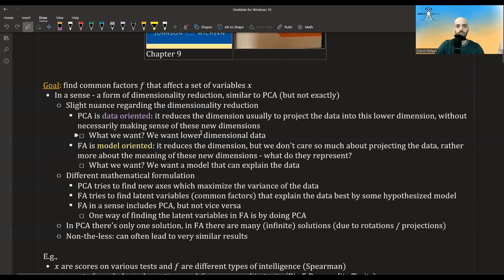So PCA is more data-oriented. It reduces the dimension, usually to project the data into this lower dimension, without necessarily making sense of these new dimensions. So what do we want in PCA? We want to lower the dimension of the data. Factor analysis is more model-oriented. It reduces the dimension, but we don't care so much about projecting the data, but rather more about the meaning of these new dimensions. What do they represent? So what do we want in factor analysis? We want a model that can explain the data.